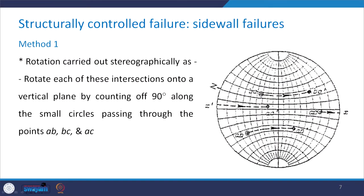To rotate point B,C by 90 degrees, we count along the small circle: 10, 20, 30, 40, 50, 60, 70, 80, and 90 — accounting for a small angular offset already present. This gives us the new position B,C prime.